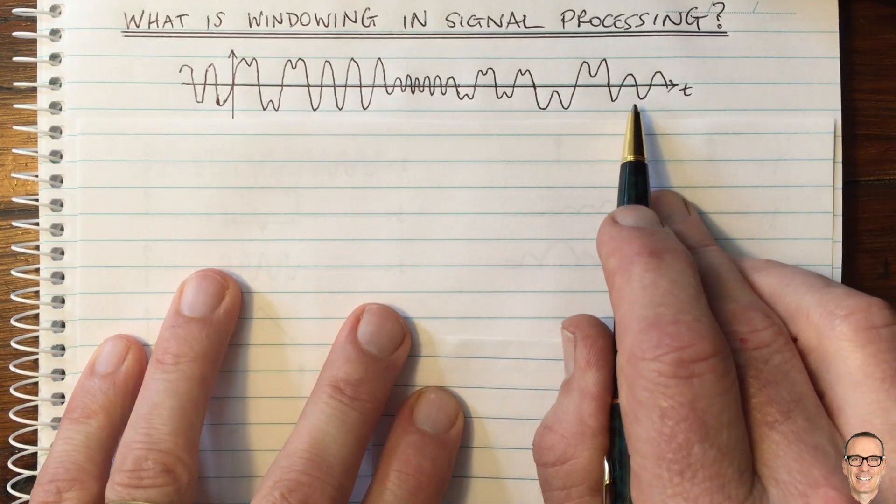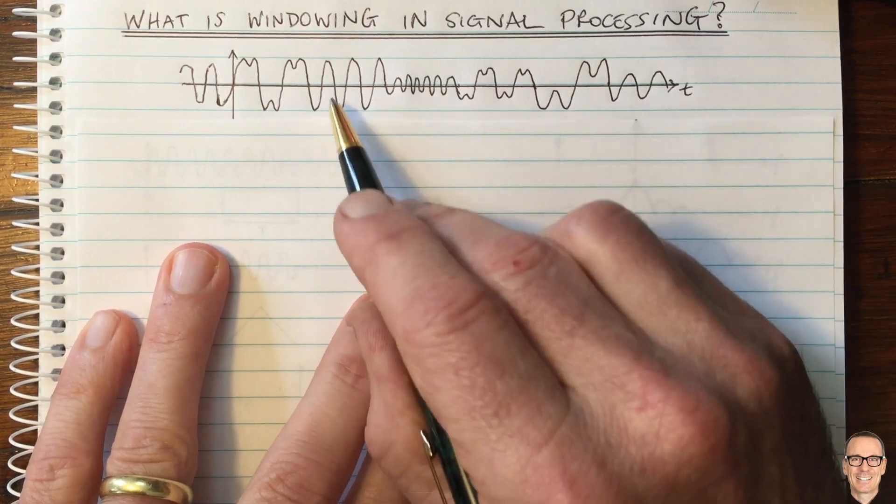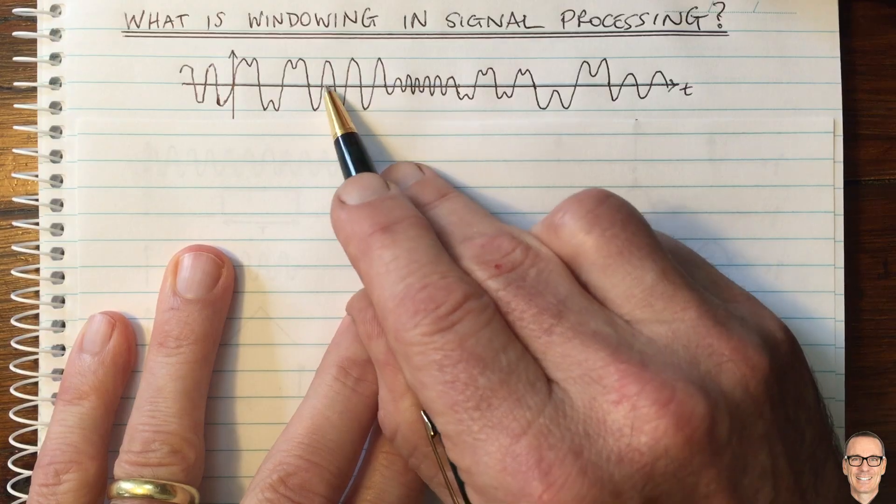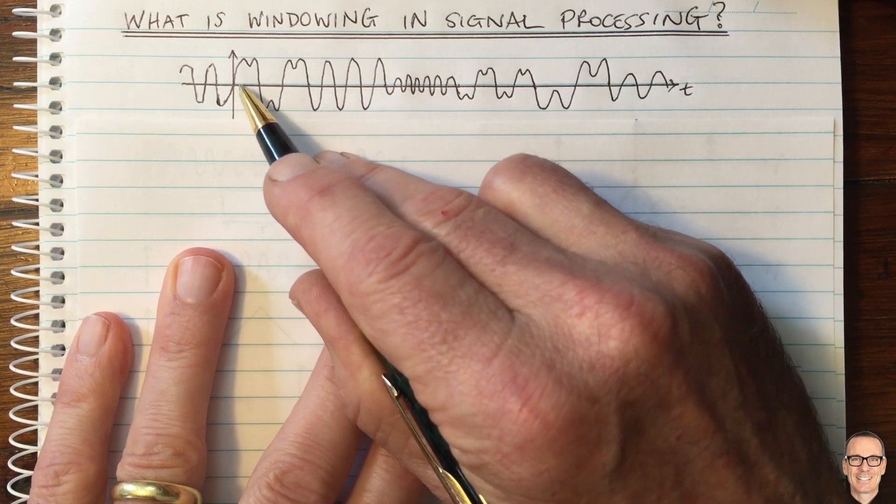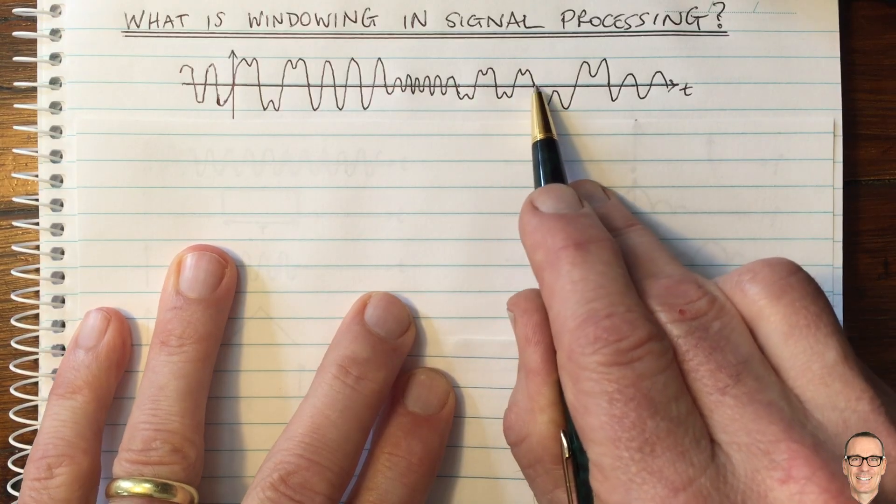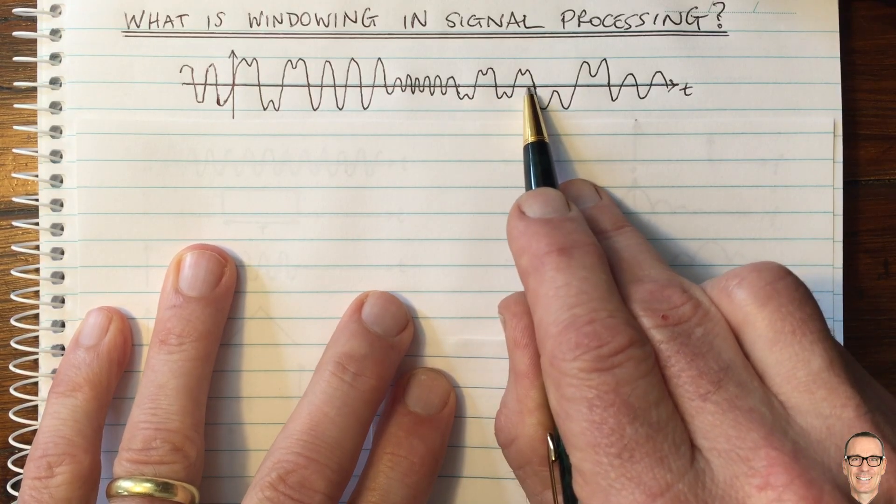Here we've got a waveform from a musical instrument where at this period of time here, just one note is being played. It's just a sine wave. Whereas at this period of time here and also here, two notes are being played together in a chord.